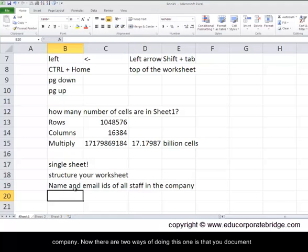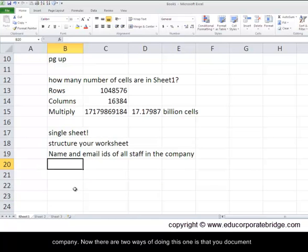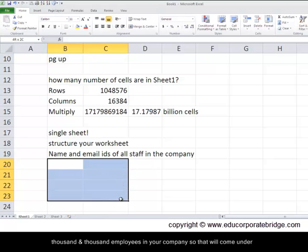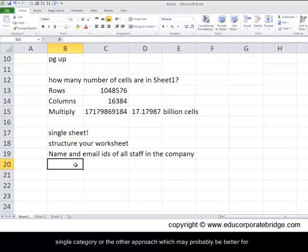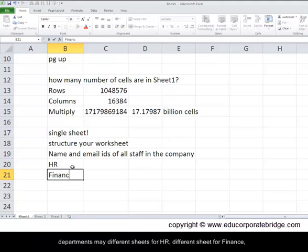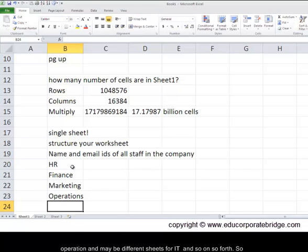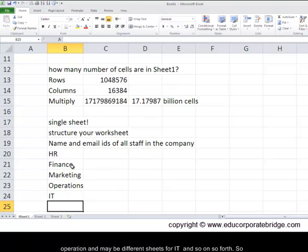Now there are two ways of doing this. One is that you document name and email ids of all staff in this sheet 1 itself and there may be thousands and thousands of employees in your company. So that will come under a single category or the other approach which may probably be better for some of you would be that you can have different sheets for different departments. Maybe a different sheet for HR, a different sheet for finance, a different sheet for marketing, a different sheet for operations and maybe a different sheet for IT and so on and so forth.